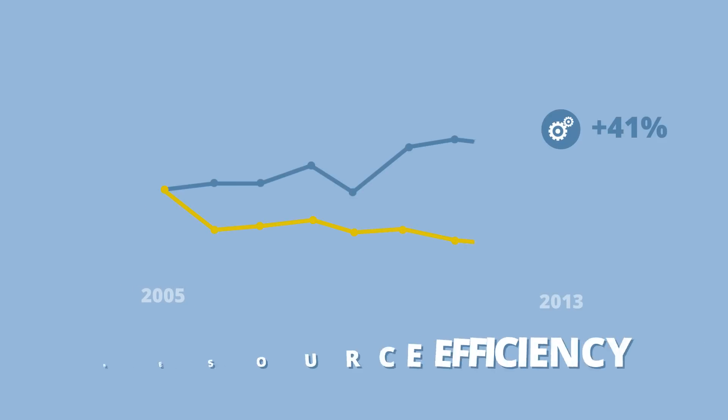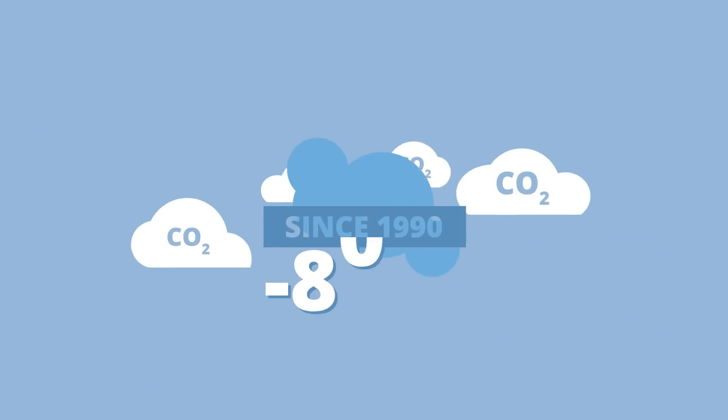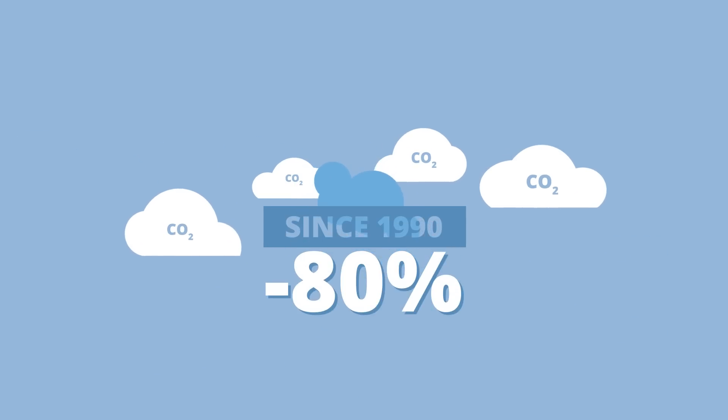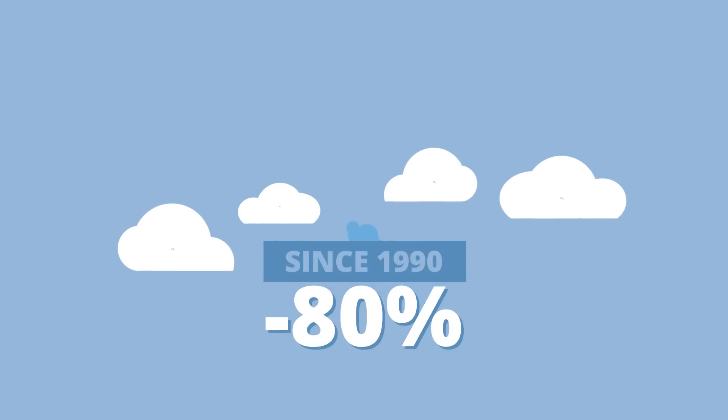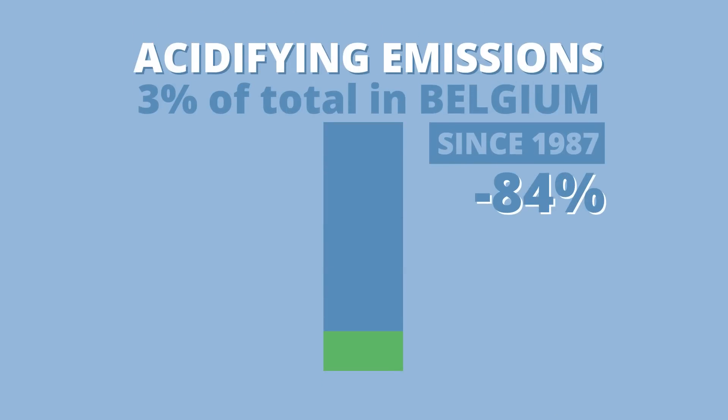Moreover, the industry has been producing more with fewer resources and has managed a significant decrease of greenhouse gases per production volume unit and of acidifying emissions to barely 3% of the total for Belgium.